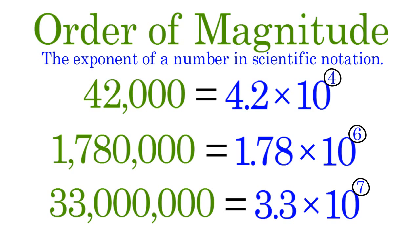Generally speaking, the order of magnitude of a whole number is one less than the number of digits in that number.